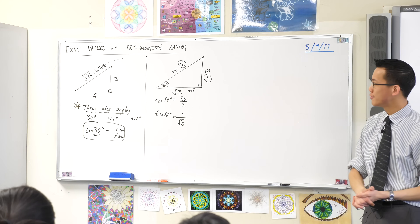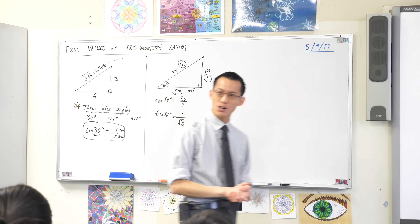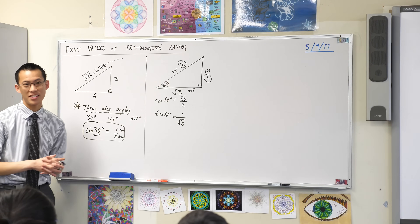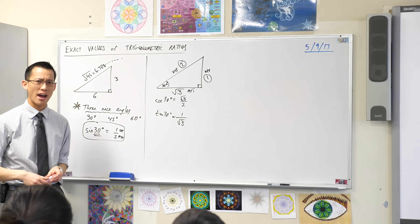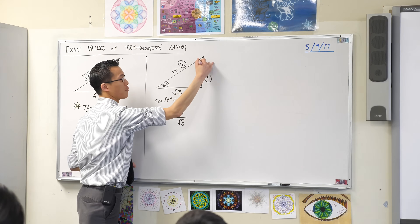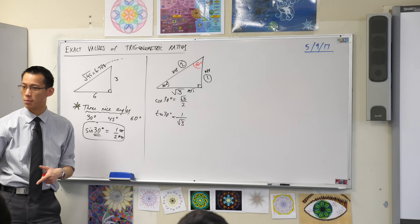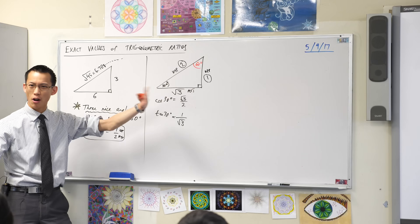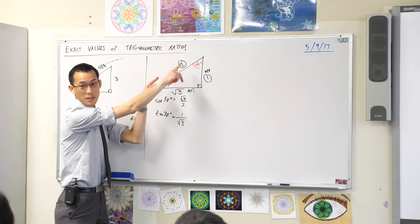Now on the same triangle, you might notice there's another angle — one of the ones I mentioned before on this list that's also hiding in this triangle, I just haven't measured it. Which one's hiding? 60 degrees is up here. Because it's the complement, right? Do you remember when we were looking at complementary angles? You've got a right angle, so these two have to be complementary.